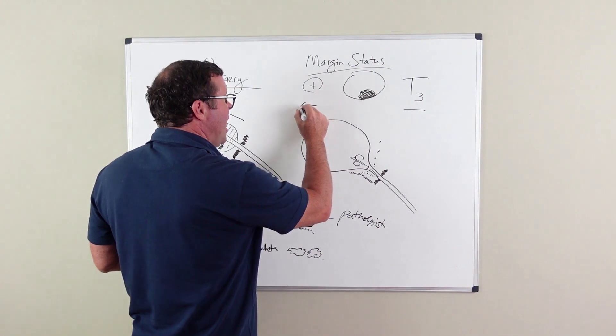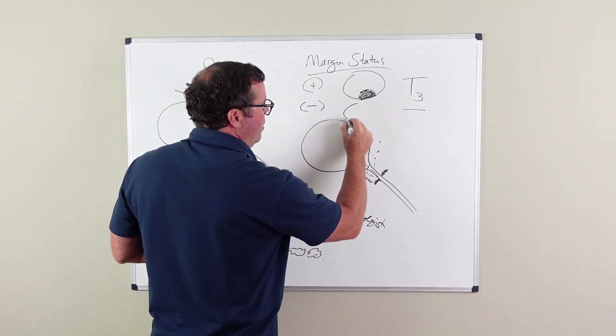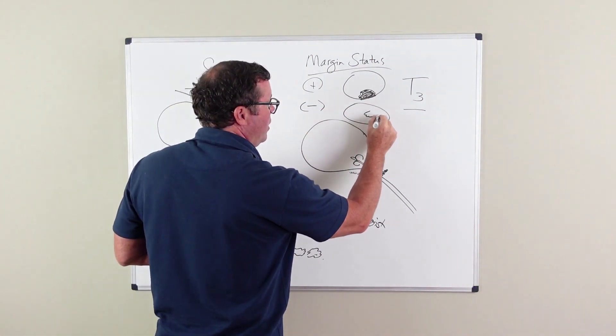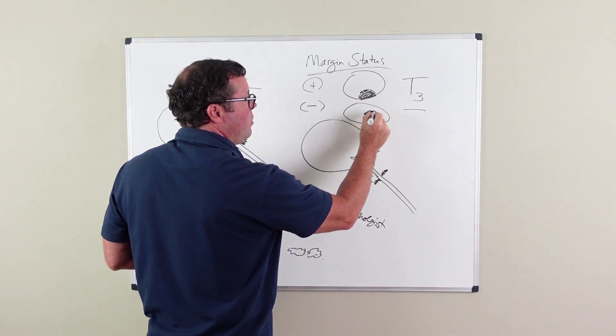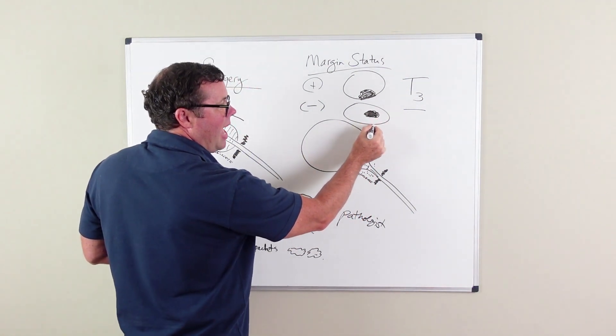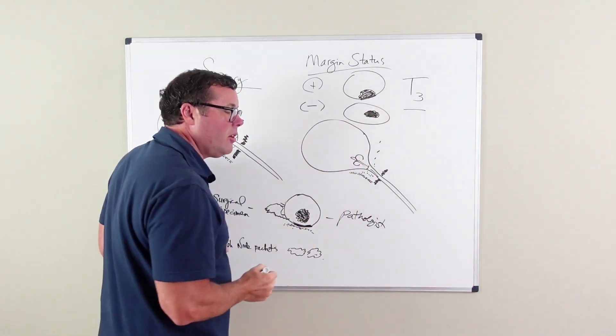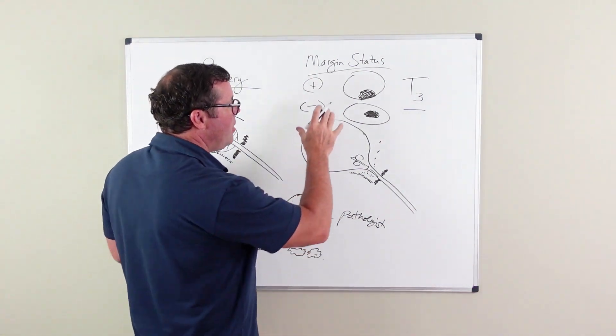If your margin is negative, your prostate was removed and the cancer was removed and the cancer did not come close to this edge of prostate. And so in those patients,